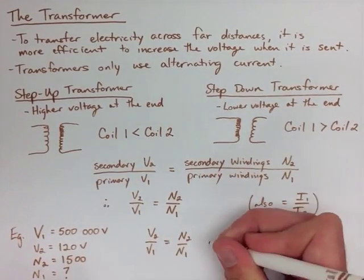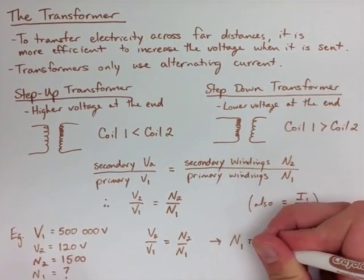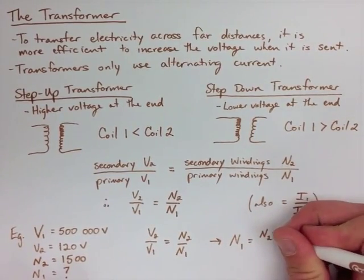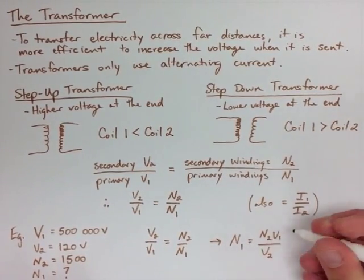N2 is 1,500 windings. So we need to find N1 by rearranging the formula to N2 times V1 over V2.